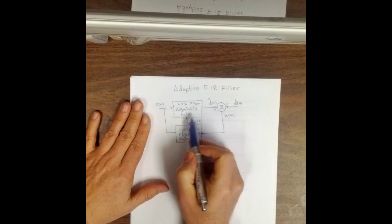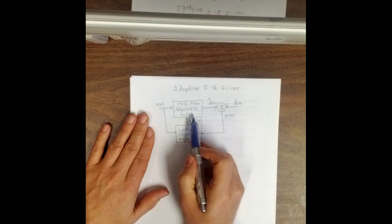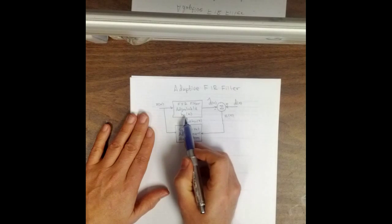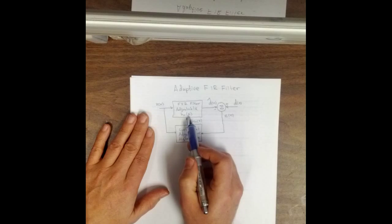Here we have an FIR filter with adjustable coefficients, h sub n of k. The n refers to the iteration you're on and every FIR filter has a number of coefficients and k indexes over those coefficients.